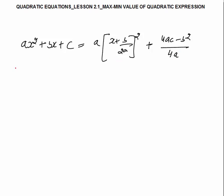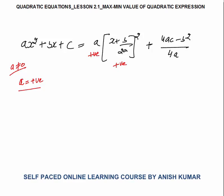Now this is what we got in the previous slide. Now if a is positive — a can be positive or negative, a can't be 0, because if a becomes 0 this will not be a quadratic expression, it will become a linear expression. So when a is positive, this a is positive. This perfect square is always positive, or at minimum it can be 0. So positive into positive, the overall product will come positive. Now can we determine the maximum value of this quadratic expression when a is positive? Maximum value will be infinite, or you can say it cannot be determined.